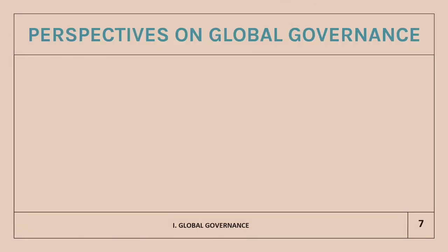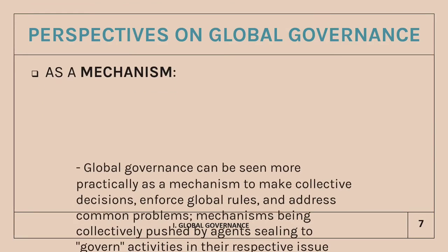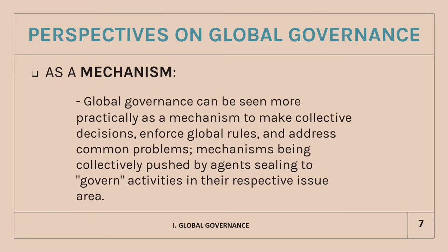Now let's talk about global governance as a mechanism. Global governance can be seen more practically as a mechanism to make collective decisions, enforce global rules, and address common problems — mechanisms being collectively pushed by agents seeking to govern activities in their respective issue areas. Governance is about decision-making and developing mechanisms and institutions required for achieving desired policy outcomes.